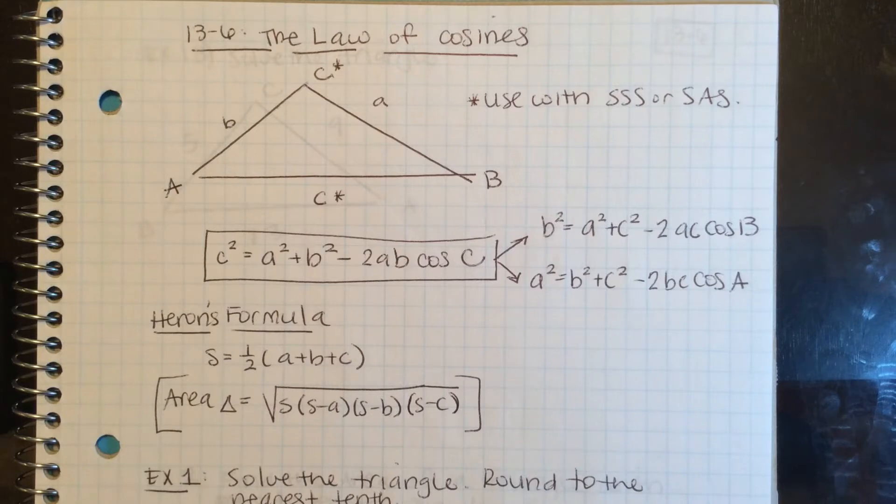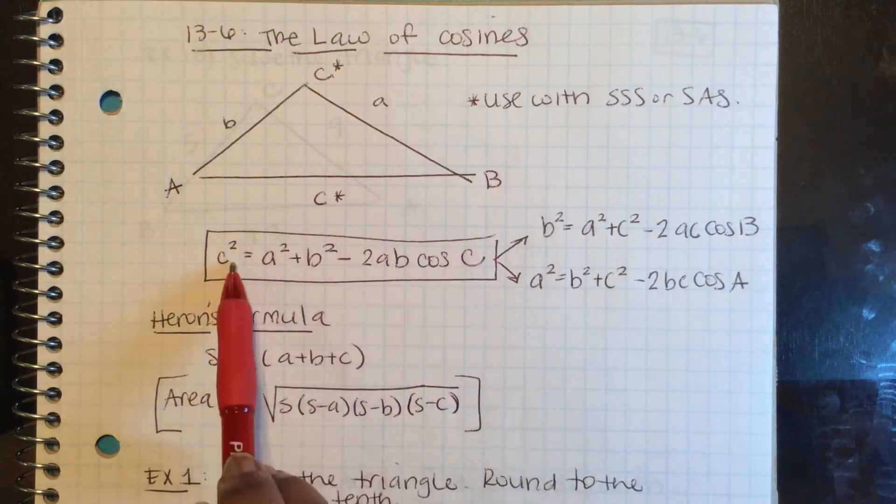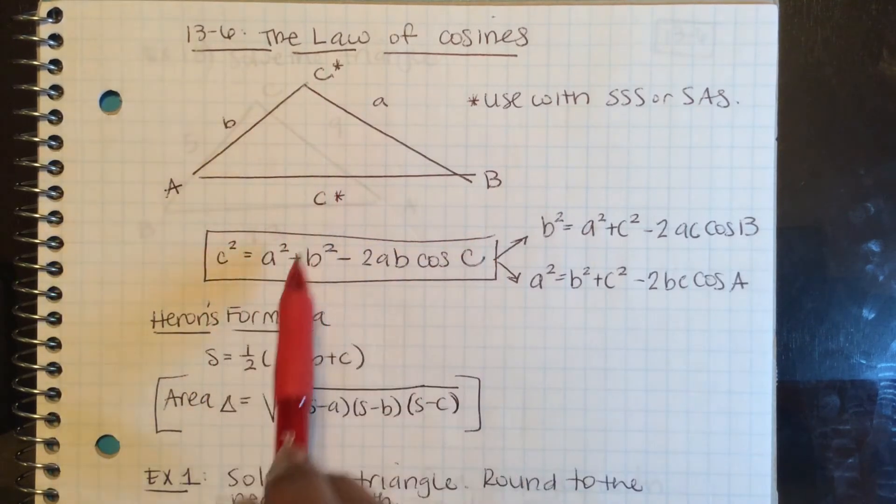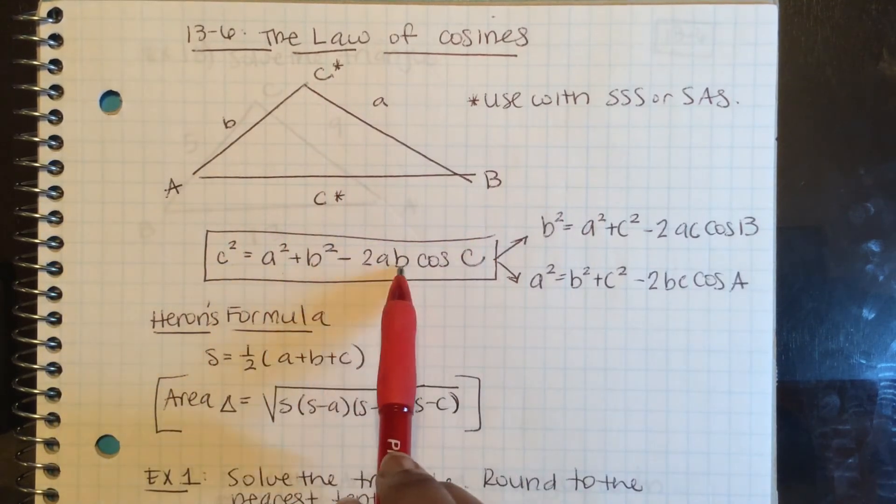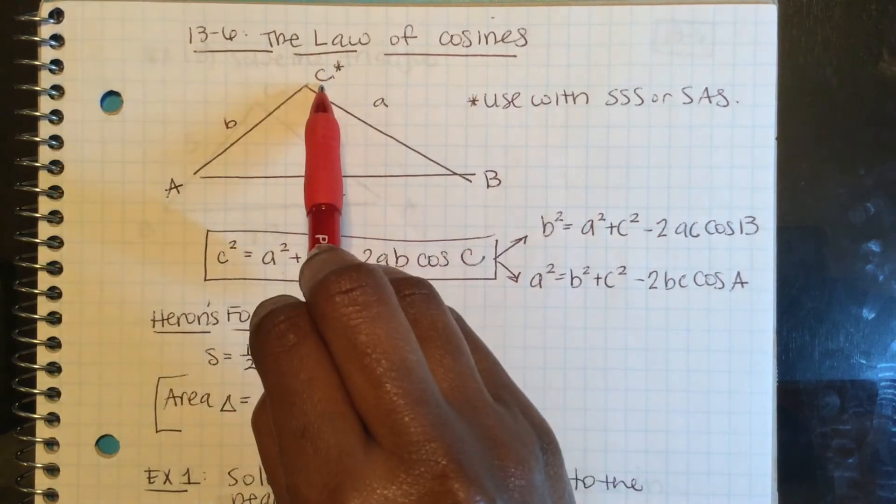There are three forms of the law of cosines, but I really like to only memorize one of them. C squared equals A squared plus B squared minus 2AB cosine C. So C being the side or the angle that we need or we're looking for.